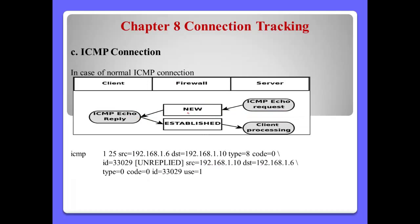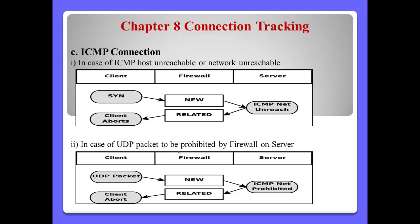ICMP connection: if the server sends an ICMP echo request to the client, we say this state is 'New'. If the client replies with an ICMP echo reply to the server, we say this state is 'Established'. According to some messages, the state can be different. For example, if the client sends a SYN packet to the server as 'New', but receives ICMP network unreachable from the server, we say this state is 'Related'.